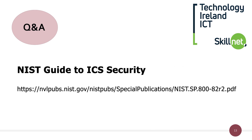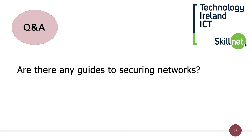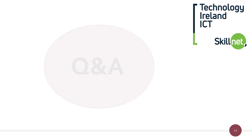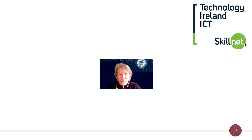For guides to securing ICS networks, NIST SP 800-82 R2 and SANS materials on secure architecture for industrial control systems are recommended. Vendor documentation and videos can also be worth reviewing, though they will naturally promote their own products.